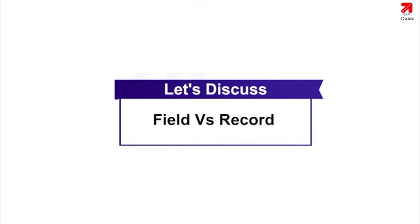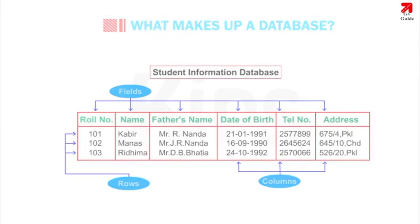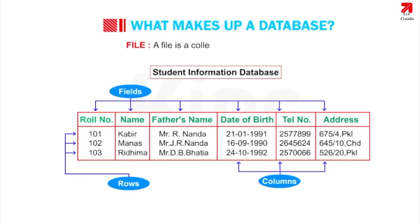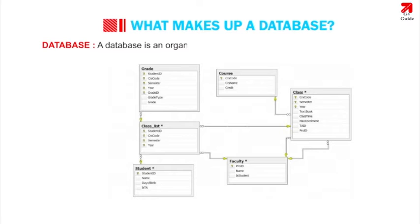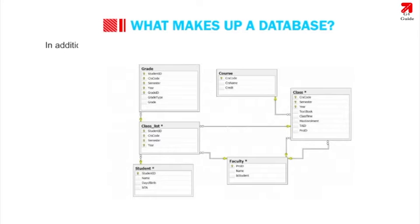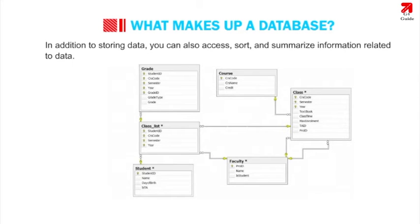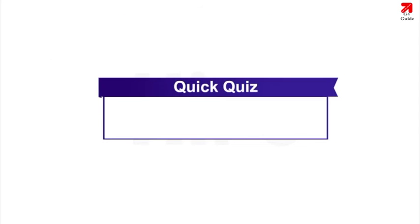Let us discuss field versus record. A file is a collection of related records. A database is an organized collection of related information or data stored in files. In addition to storing data, you can also access, sort, and summarize information related to data. Can you quickly tell the difference between a file and a database?